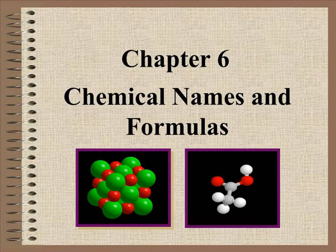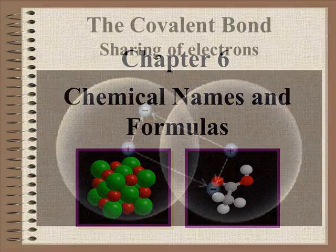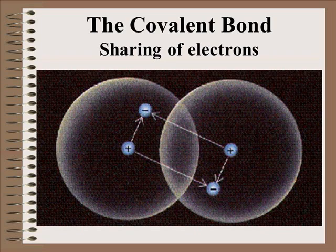We're going to finish up Chapter 6 by learning to name covalently bonded compounds. The covalent bond forms when you have a sharing of electrons between two nuclei rather than a transfer of electrons.